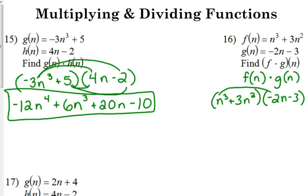n cubed times negative 2n, negative 2n to the 4th. Outside, n cubed times negative 3 is negative 3n cubed. Inside, 3 times negative 2 is negative 6, n squared times n is n cubed. And our last, 3n squared times negative 3, negative 9n squared.